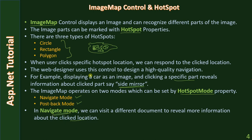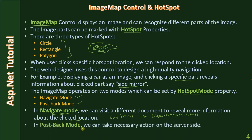In navigate mode we can visit a different document to reveal more information about the clicked location. For example, using our car image, when the user clicks the side mirror the page will navigate from the car home page, car.html, to sidemirror.html. In postback mode we can take the necessary action on the server side — data will be posted to the server and based on the hotspot you know which part of the image was clicked, so you may have separate routing for part one, part two, and part three.